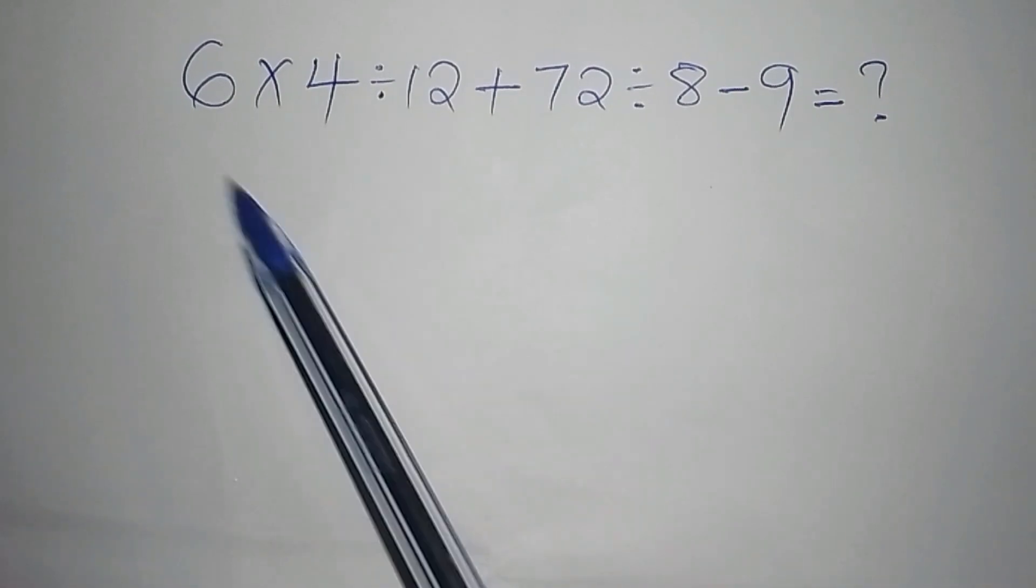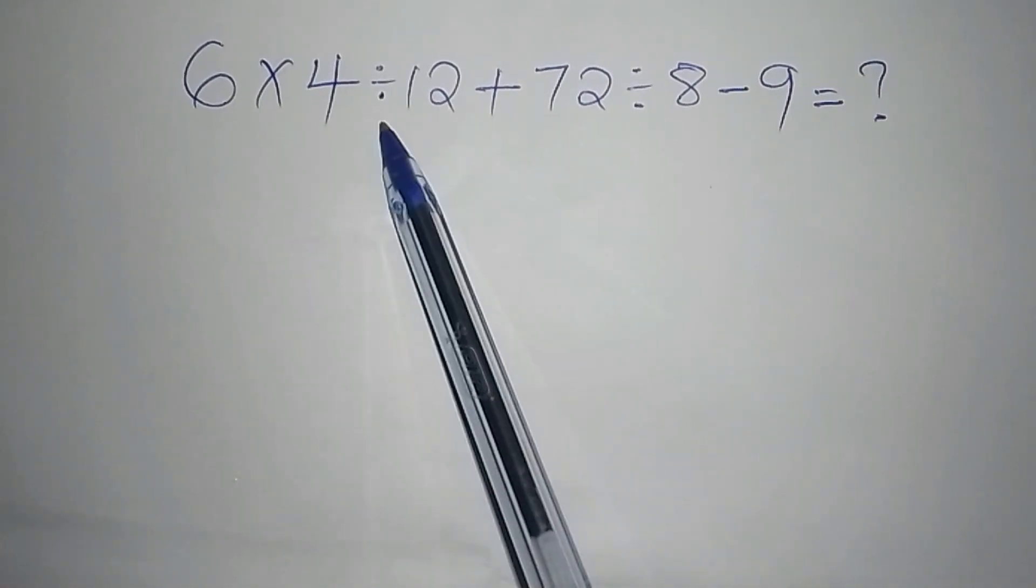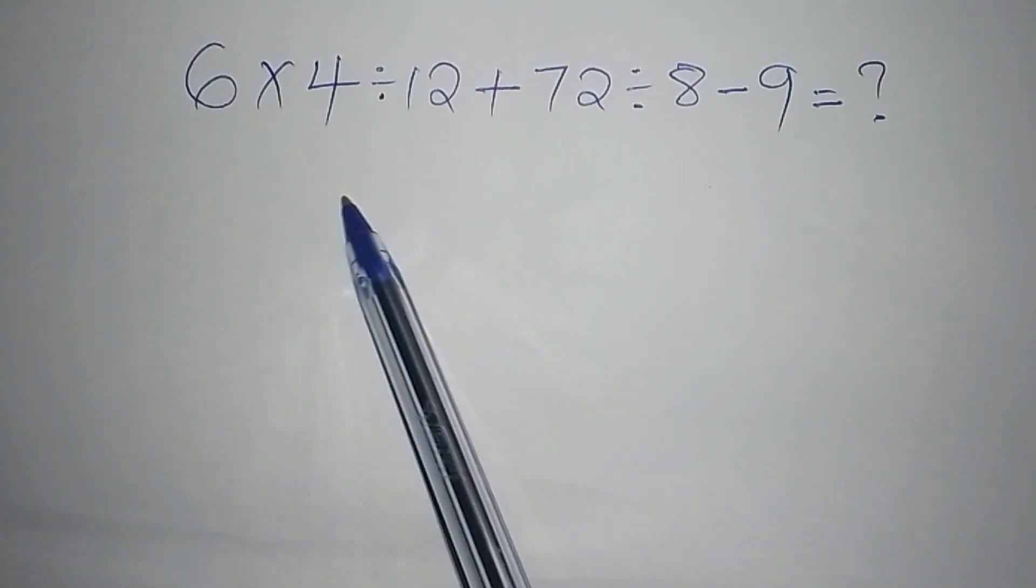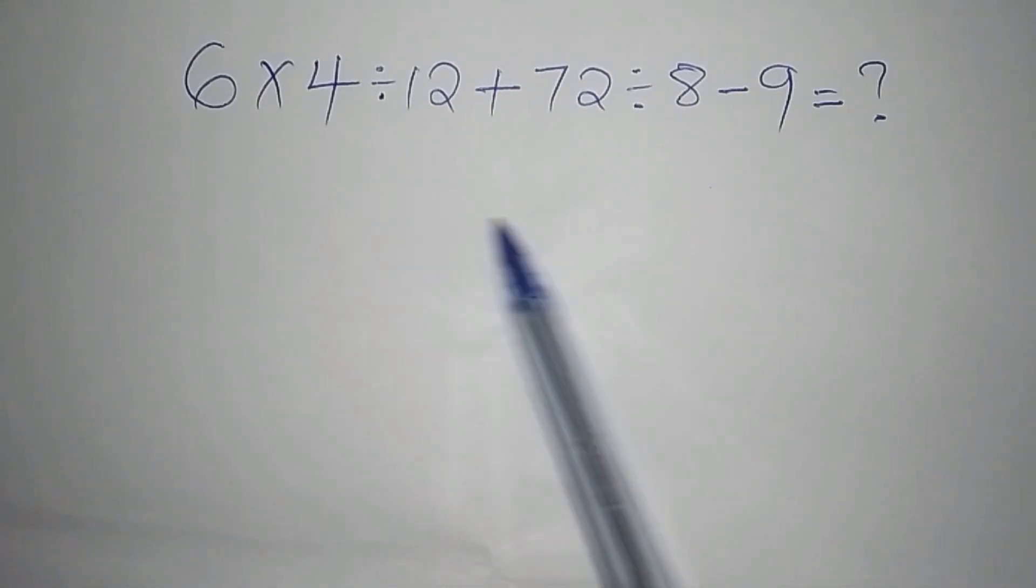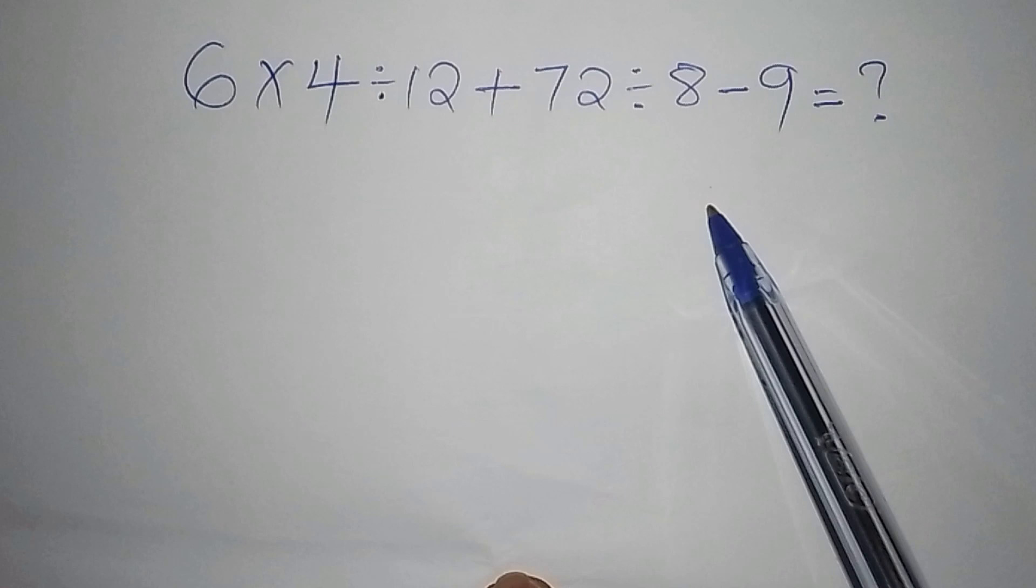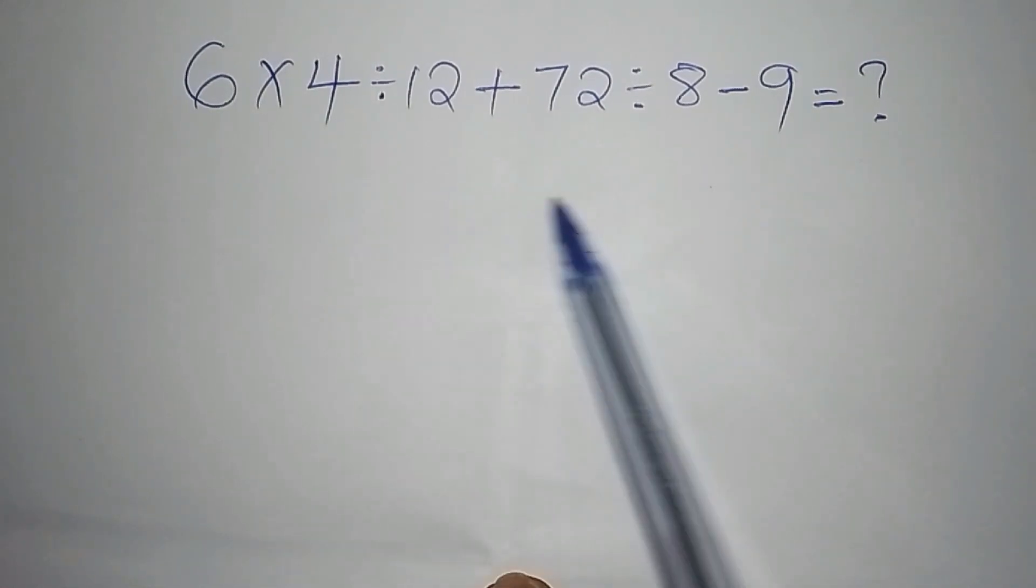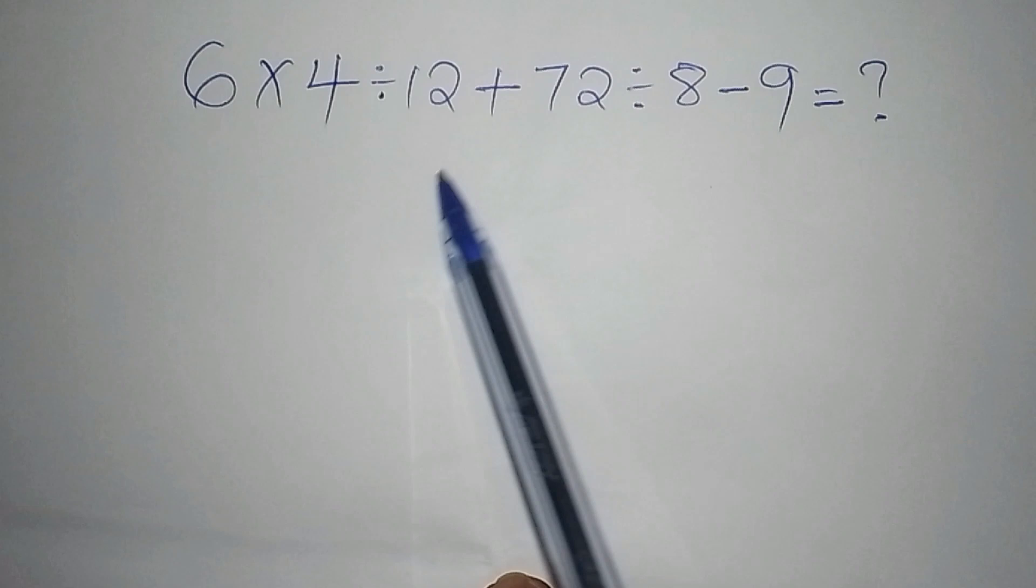Hello everyone, welcome. Let's work out this: 6 multiplied by 4 divided by 12 plus 72 divided by 8 minus 9. Do you know you can work out this math problem without any issue? If you feel like you know how to work out this math problem, you can share with me your answer at the end of this video so that you can confirm if you've got the correct answer.